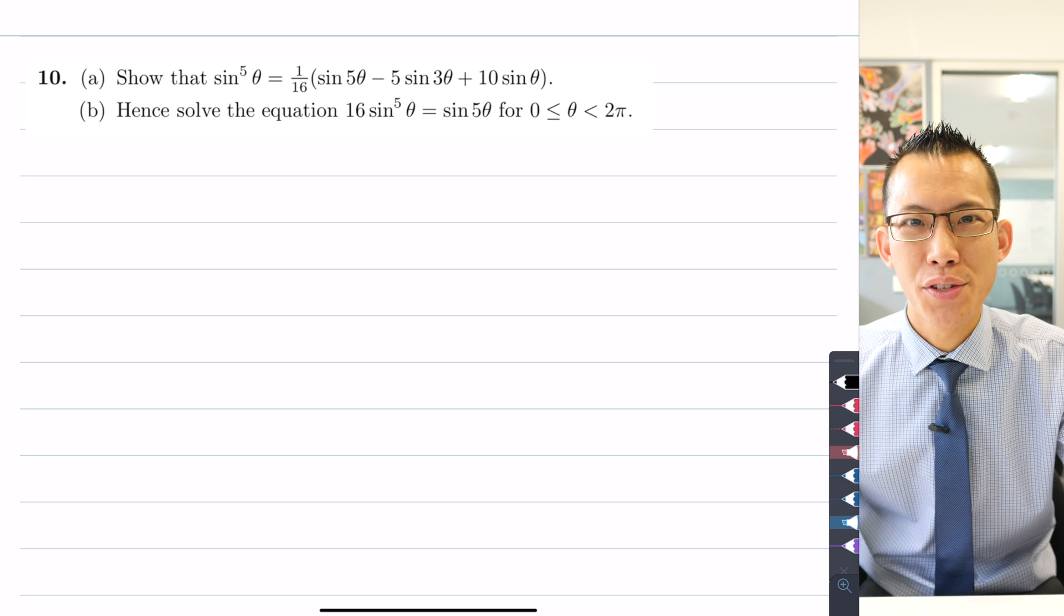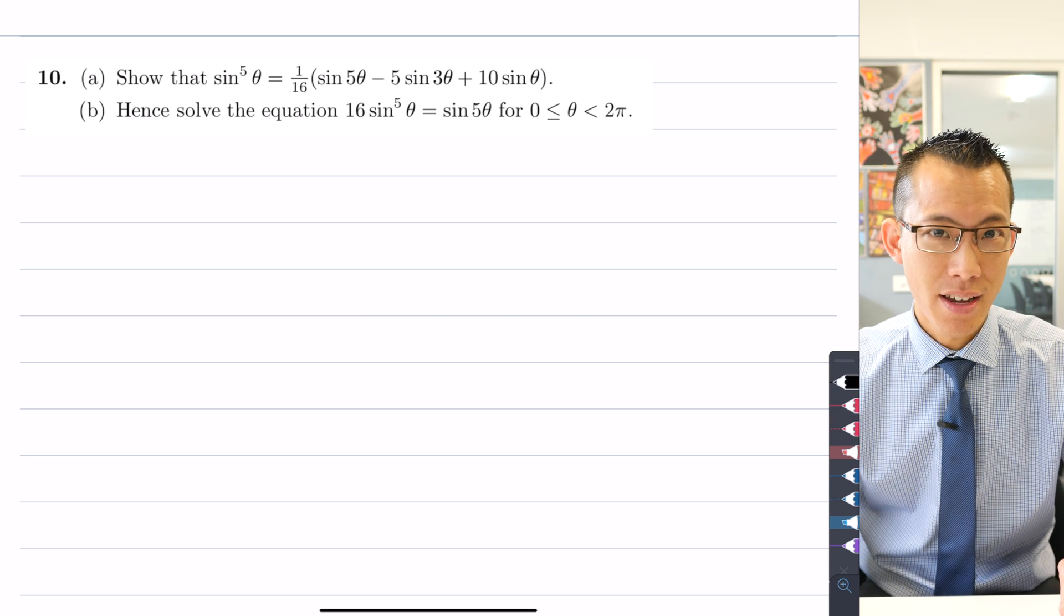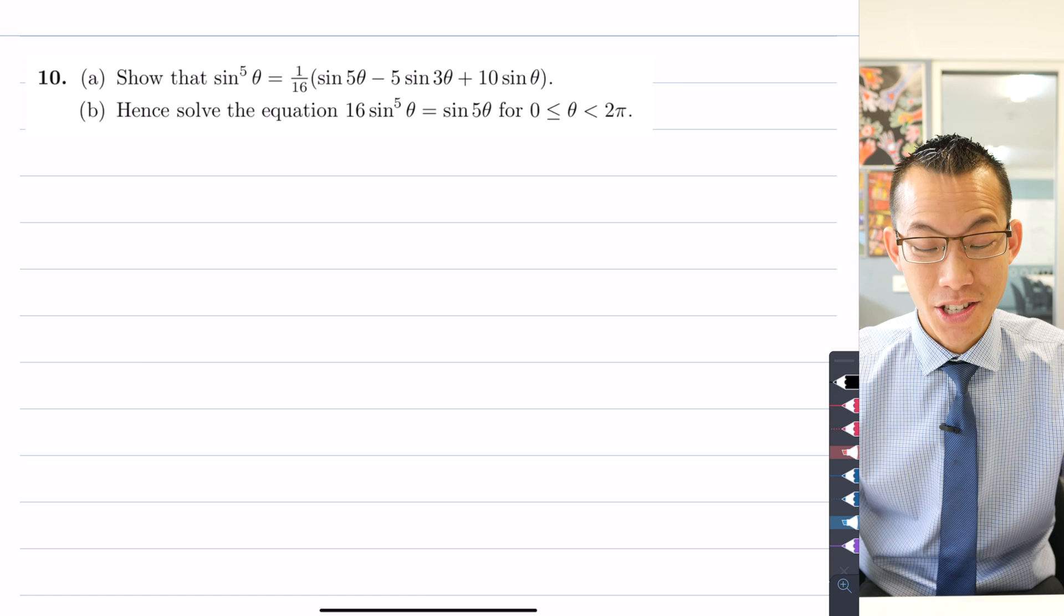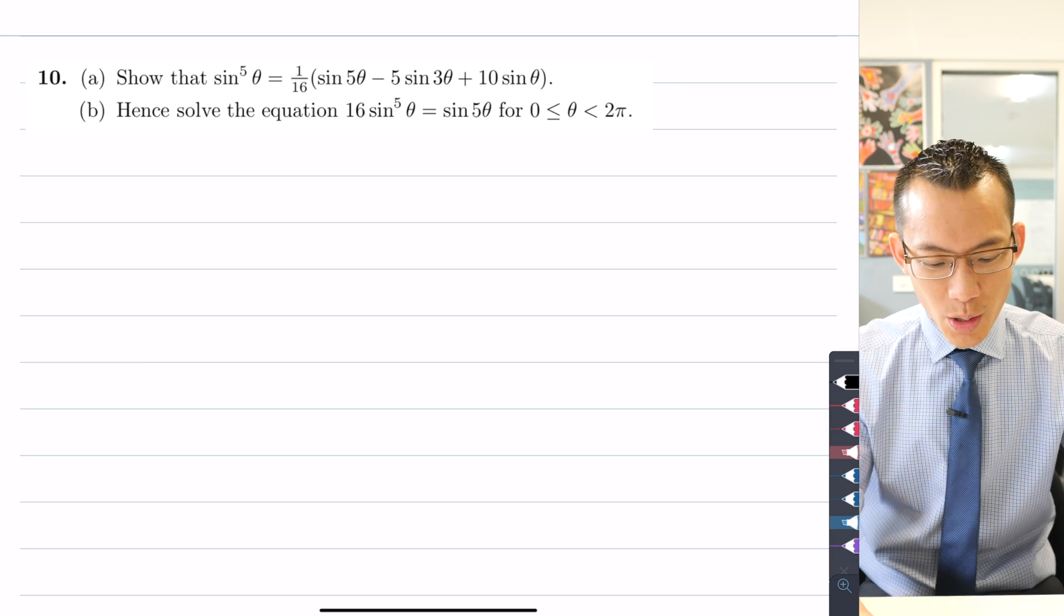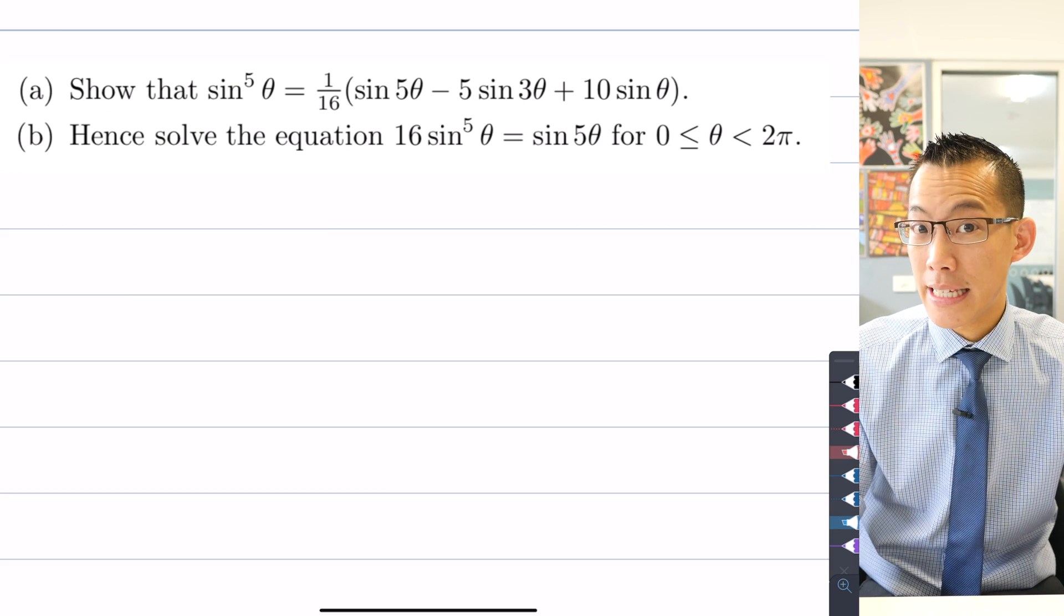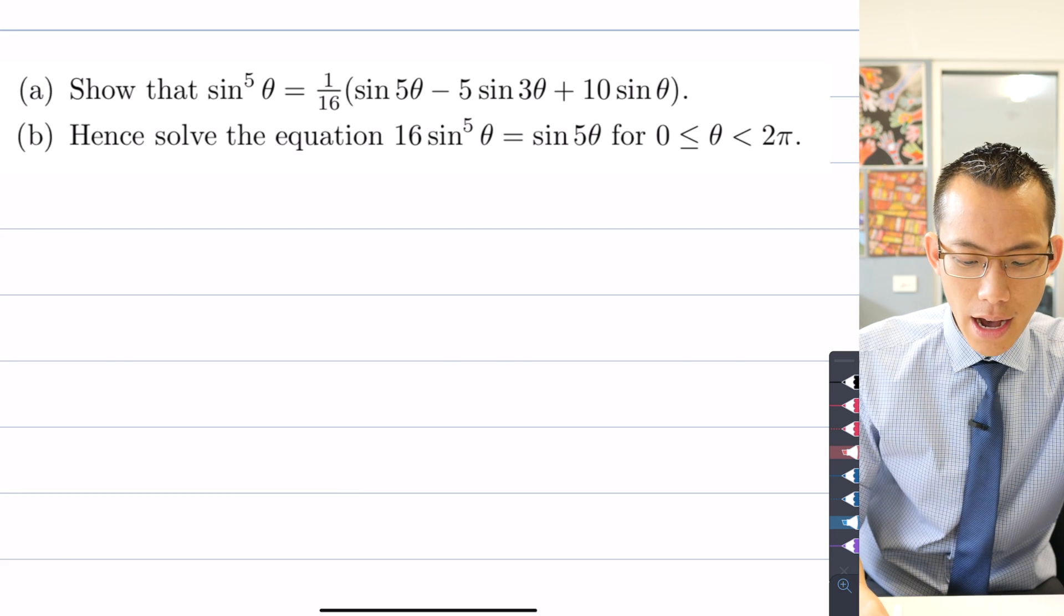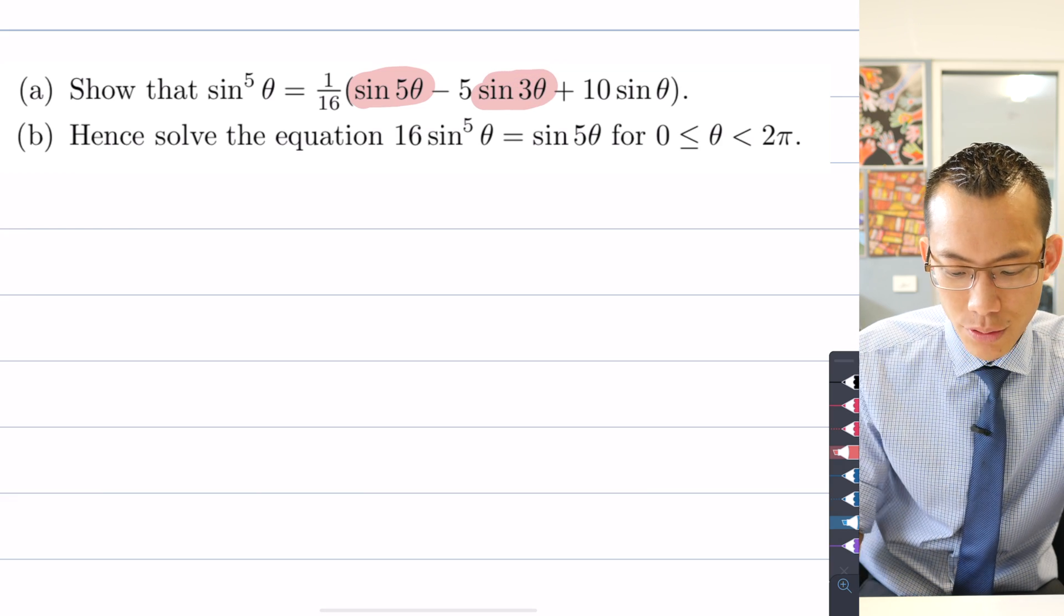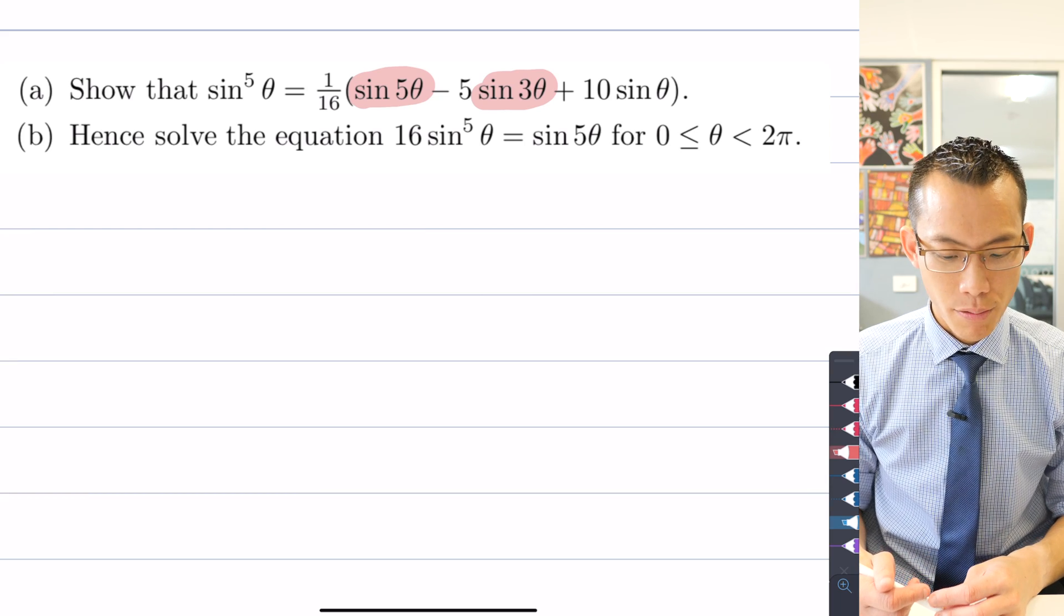This question combines De Moivre's Theorem with some of our older techniques for handling trigonometric equations that we need to solve. How did I know that I needed De Moivre's Theorem for this question? Not just that the whole exercise is using this result, but also when you have a look at the question, like if this question was presented to you in the middle of an exam.